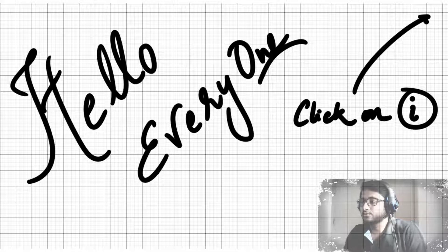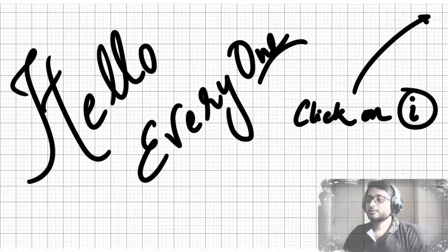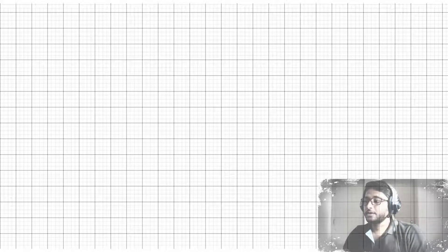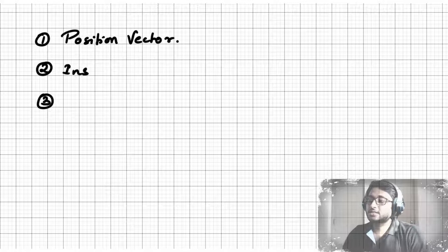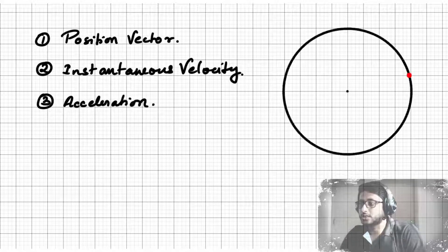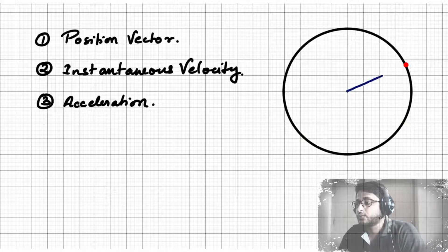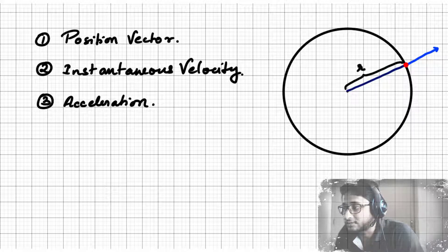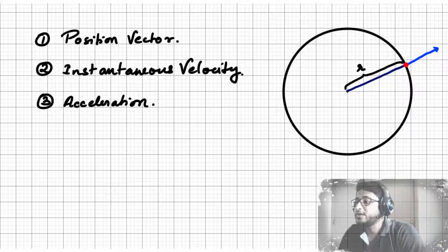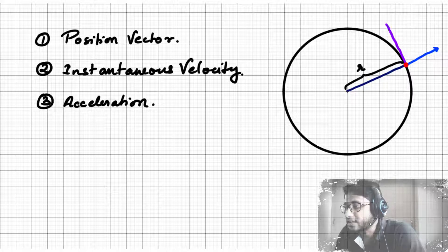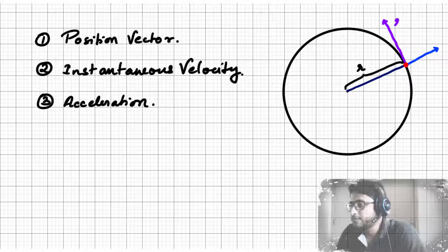First of all, let's do a recap of what we have already done in the previous video. We calculated the position vector, instantaneous velocity, and acceleration of a particle executing circular motion about a fixed point. We found that the position vector was along the radius, having a magnitude equal to the radius of the path. Then we differentiated the position vector to get velocity, which we found having a magnitude of r times ω along the tangent.